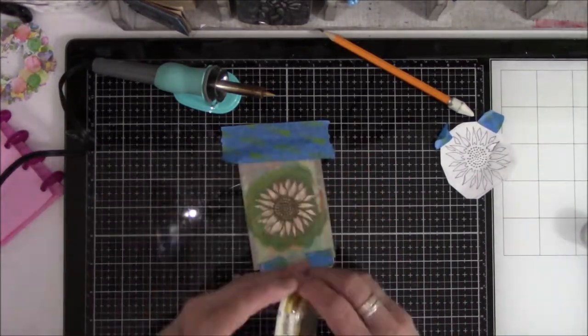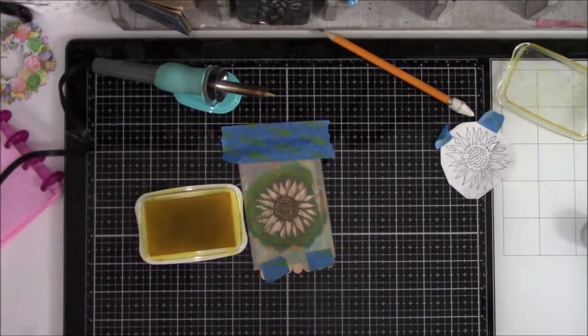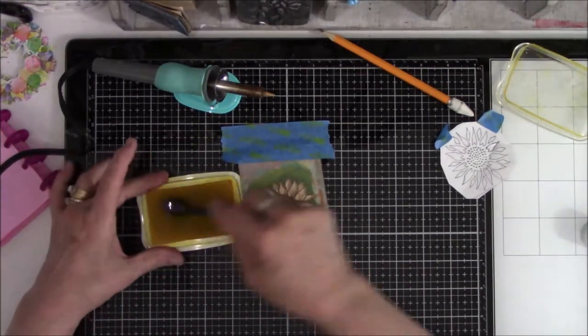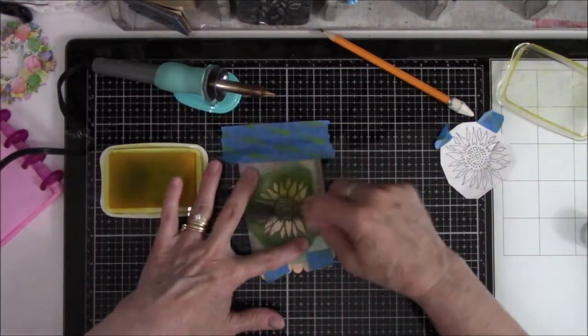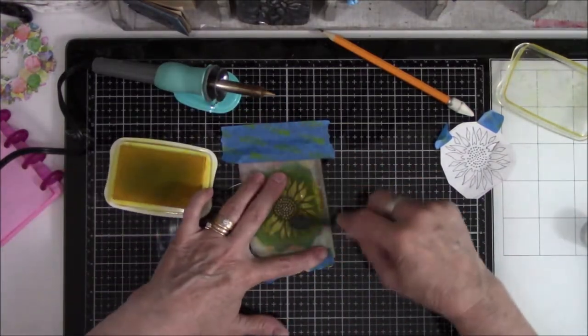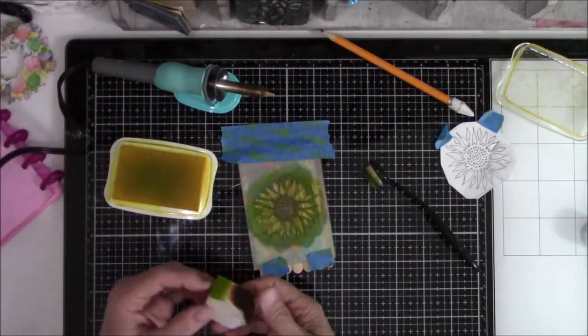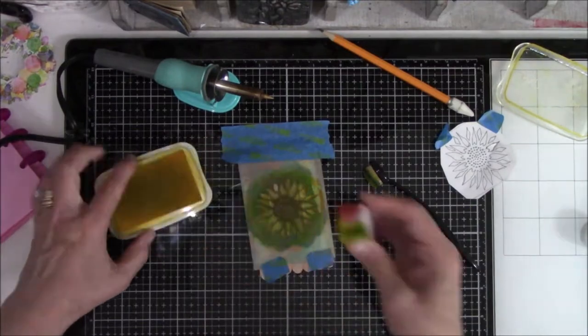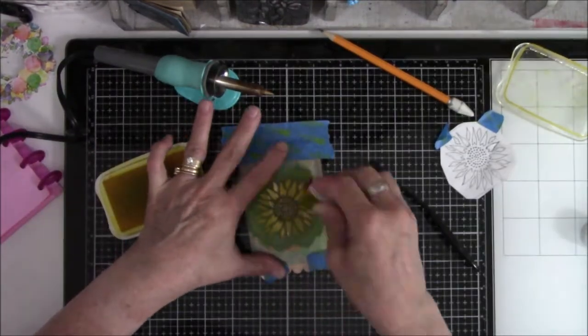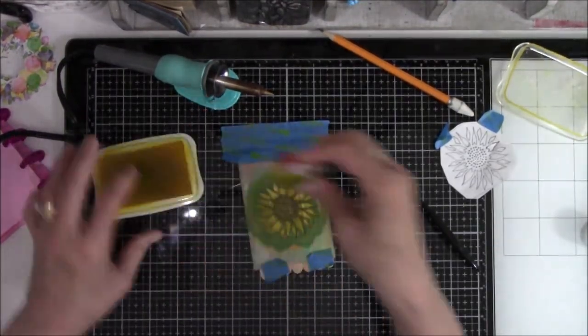Let's put the stencil back on and we're going to actually trace with the pencil. Nope. What I'm going to do is I'm going to color this with ink through the stencil, and then I will outline the leaves.